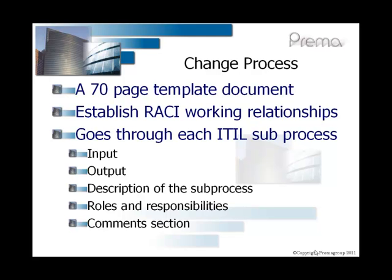What we are trying to do is ensure that we get to a control level 3 against the Capability Maturity Model assessment. This describes a formalised process in which the process objective, activities, inputs and outputs have been defined. The output is formalised, consistent and repeatable. There is one common process across the organisation, which is documented, understood and used by all staff.